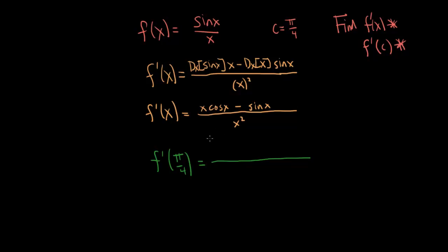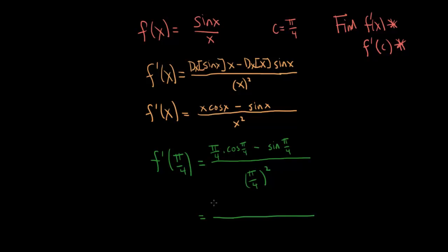Everywhere there is an x, turn it into a pi over 4. So we get pi over 4 times cosine of pi over 4 minus sine of pi over 4, divided by pi over 4 squared. Now let's think about a unit circle here. We have pi over 4 times cosine of pi over 4.